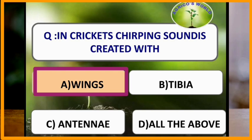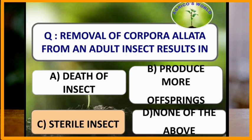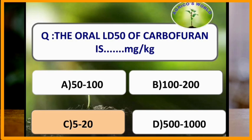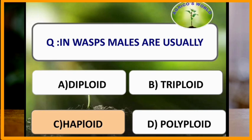Removal of corpora allata from an adult insect results in a sterile insect. The oral LD50 of carbofuran is 5 to 20 mg per kg. In bees, males are usually haploid.